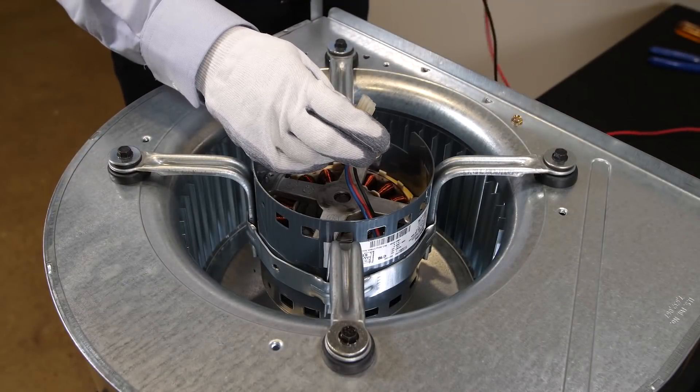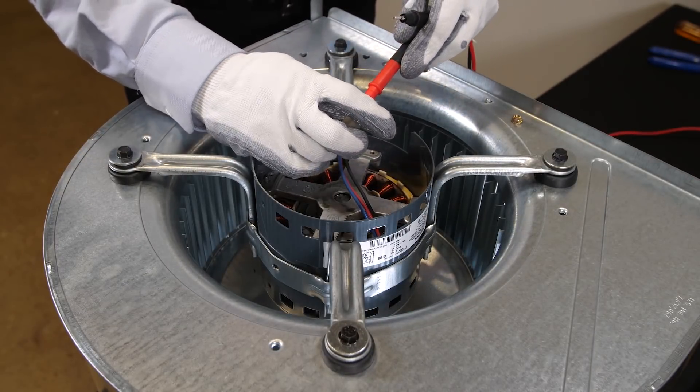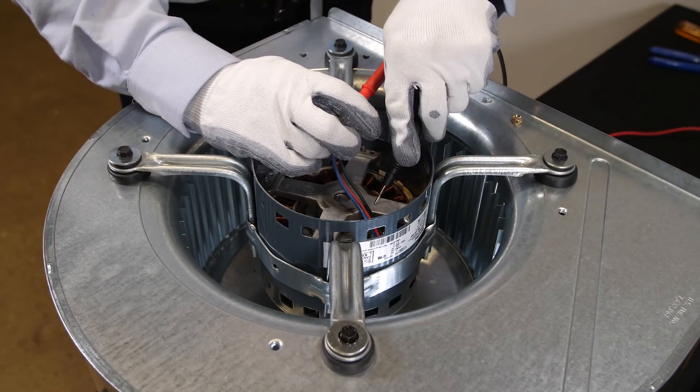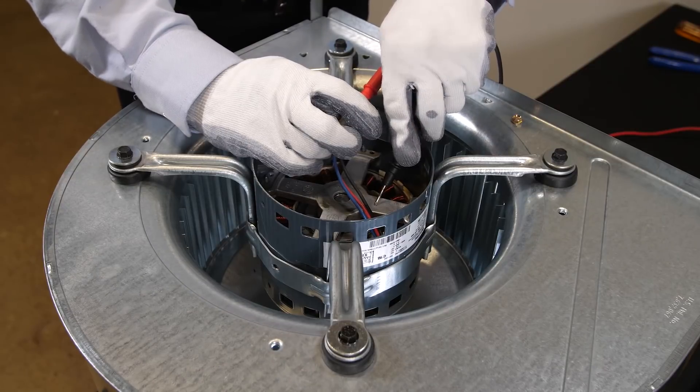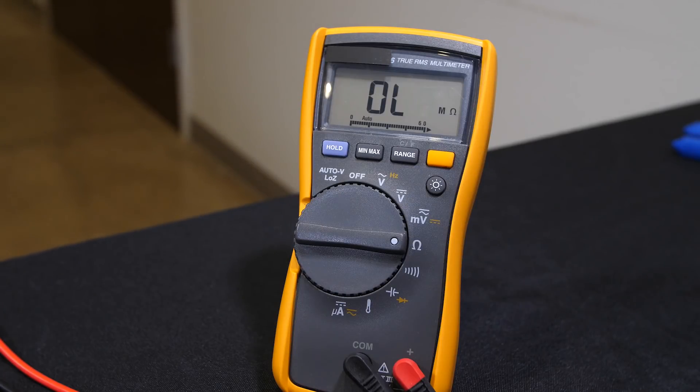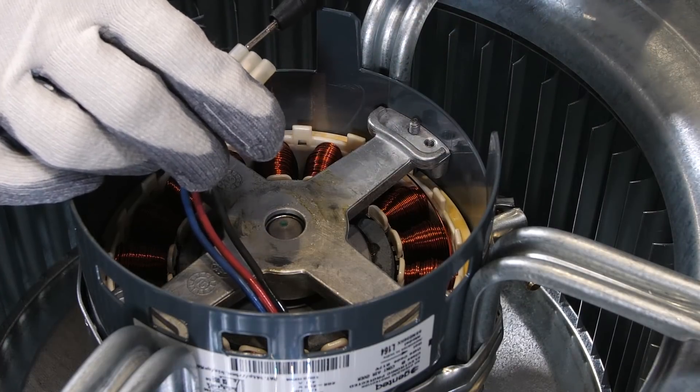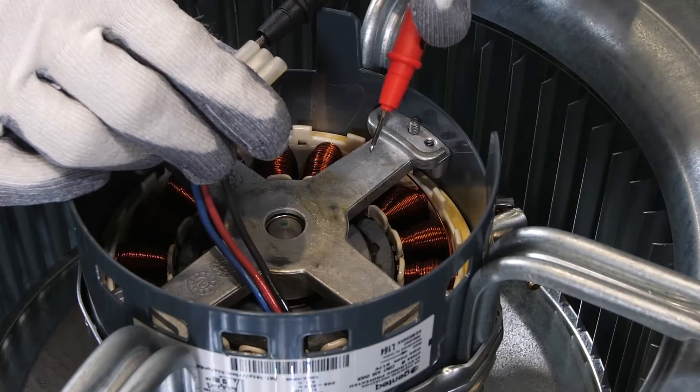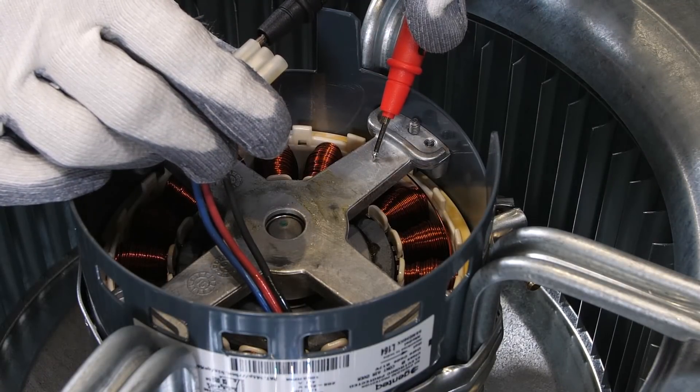Check for short to ground. Use an ohmmeter to measure the resistance from all three of the motor connector pins to the aluminum end plate of the motor. This resistance should be greater than 100,000 ohms. If this test fails and you have less than 100,000 ohms, you have a defective motor and it needs to be replaced.